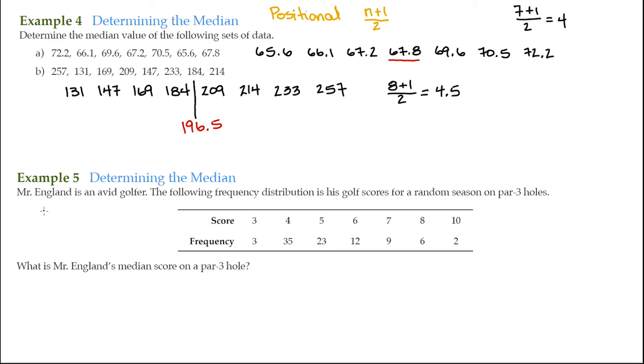For this example, we have Mr. England is an avid golfer. The following frequency distribution is his golf scores for random season on par 3 holes. So here is our frequency distribution here. You can see he scored a 3, he did that 3 times. He scored a 4, 35 times. He scored a 5, 23 times and on and on. What is Mr. England's median score on a par 3 hole?